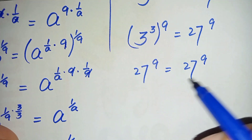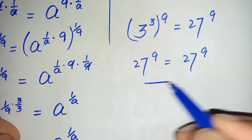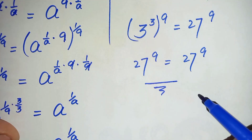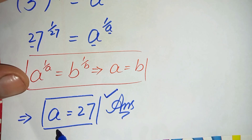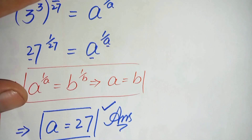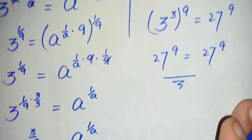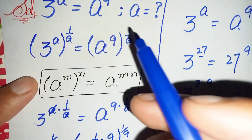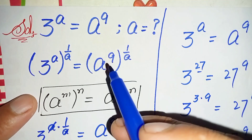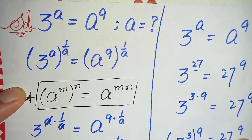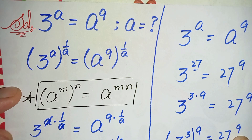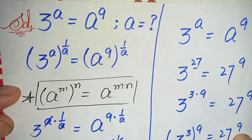Both sides are the same, which means a is equal to 27 is the exact and correct value of a, and it is one of the possible solutions of this nice exponential equation. If you liked this video, don't forget to subscribe to my YouTube channel. Thanks for watching.